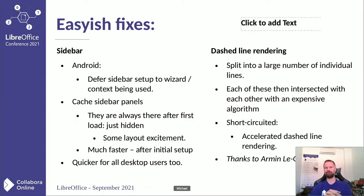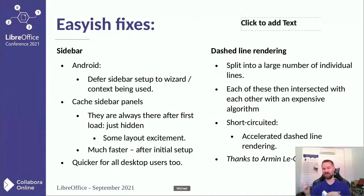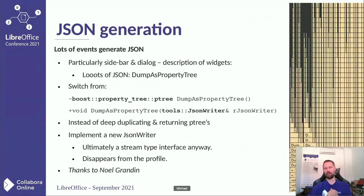For the sidebar, deferring its setup until you actually need it helps, but particularly caching the panels so they're always there but not necessarily visible — hidden at very small sizes — means we can relay them out in a cached way: way quicker for all desktop users, less flicker, less CPU time. That's all been redone recently for native widgets, so we'll have to revisit that caching, but we're looking forward to shipping that in the next Collabora Online with a much prettier sidebar.